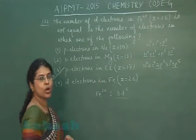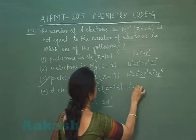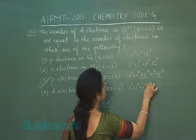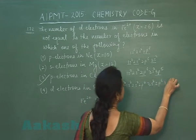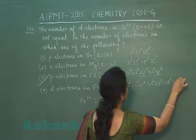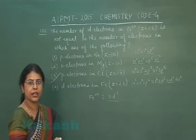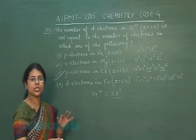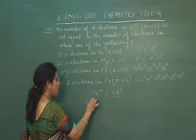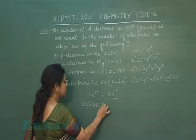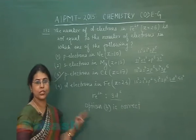Option 4: d-electrons in Iron — configuration is 1s², 2s², 2p⁶, 3s², 3p⁶, 3d⁶, 4s², so d orbital also has 6 electrons. Only Chlorine is not having 6 electrons, so option 3 is the correct answer.